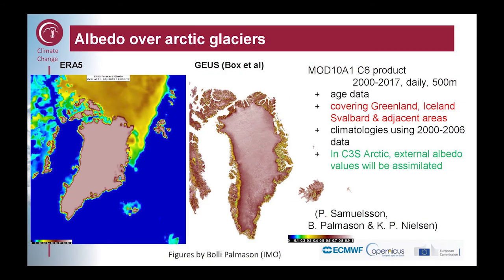We have used glacier albedo over all glaciers, using satellite albedo data — a daily product at 500-meter resolution. This goes back to 2000 when the MODIS satellite launched; for the 1990s we used a climatology based on years 2000 to 2006. On the left-hand side you can see the glacier albedo in ERA5 — it's completely homogeneous and very high. In some places the absorbed shortwave can be wrong by 300% or more where there are dark areas in the real world. The glacier mask is also way too large, both for Greenland and Svalbard, which is a huge issue.